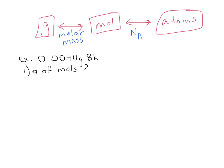So right now I've drawn out a roadmap for you: grams to moles to atoms. We can convert — if we start with moles, we can convert to grams, or from moles to atoms. If we start with atoms, we go to moles and then to grams. If we start with grams, we go to moles and then to atoms. The way we transfer between grams and moles is the molar mass — that's the number on the periodic table. For carbon, the molar mass is 12.01 grams per mole, and because it has two units, it's a conversion factor between grams and moles.